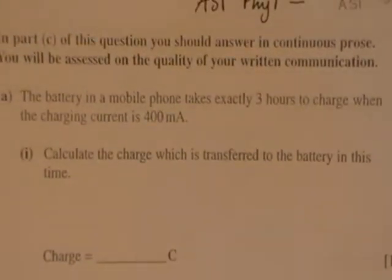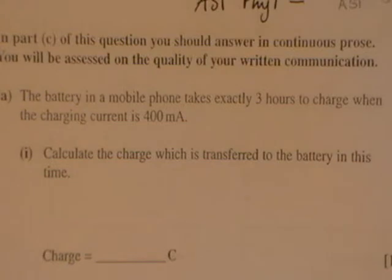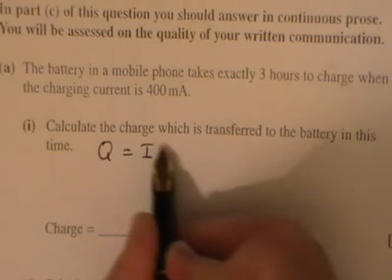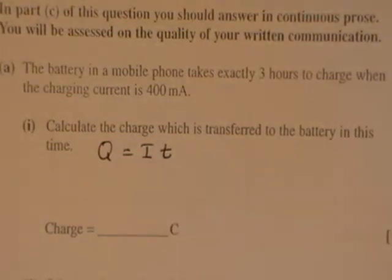The battery in a mobile phone takes exactly three hours to charge when the charging current is 400 milliamps. Calculate the charge which is transferred to the battery in this time. This is very straightforward, but right back in GCSE we used Q equals IT, where charge is equal to the current times the time.